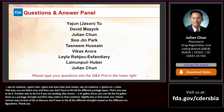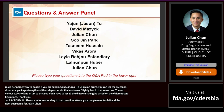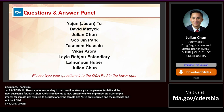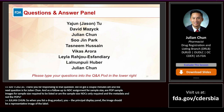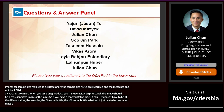As a follow-up on NDC assignment for sample size: are PDP images for sample sizes required to be included in the drug listing, or are the sample-size NDCs only required in the metadata and not the PDPs? When listing a drug product, the principal display panel image should be a representative image of the label. It doesn't have to include all the different sizes — the samples, the 30-count bottle, the 100-count bottle — just one label that is representative of all of that product type.